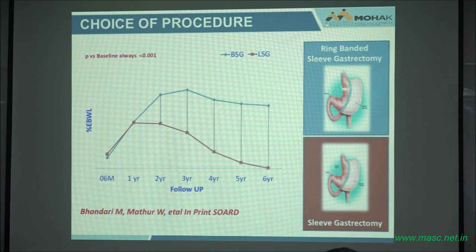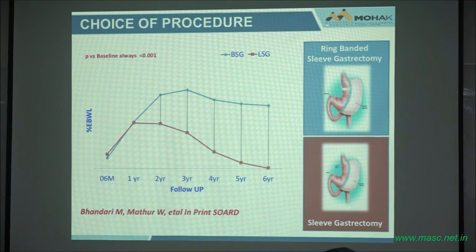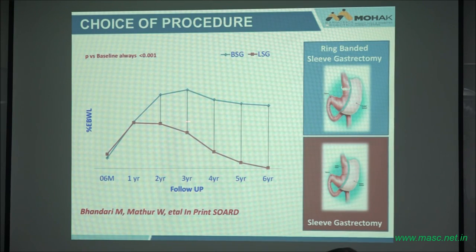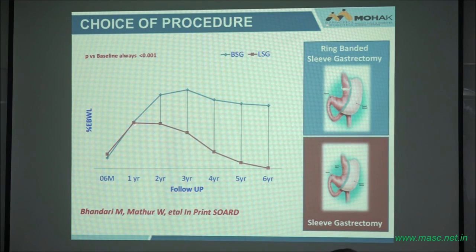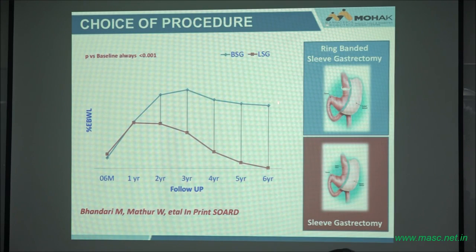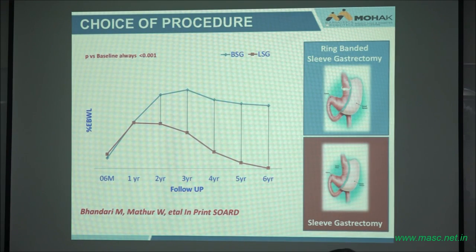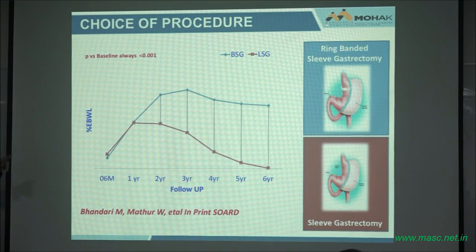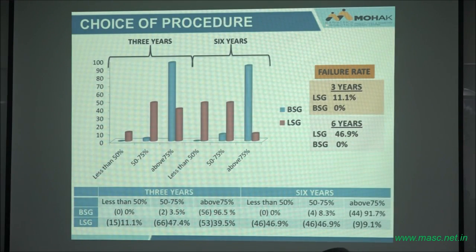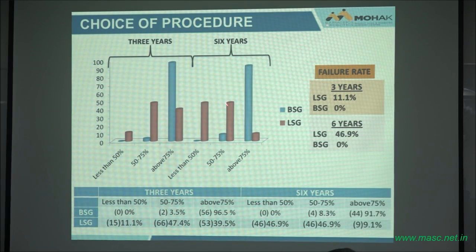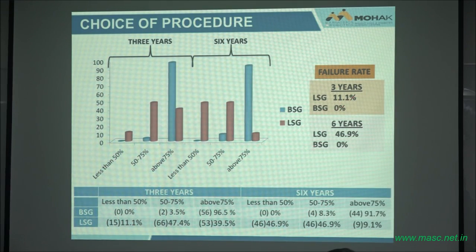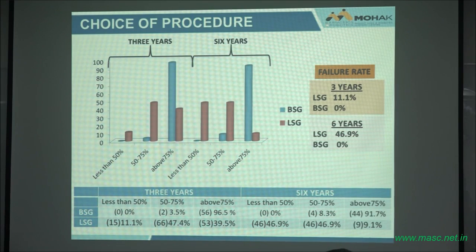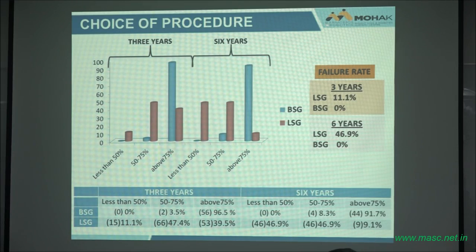This is our own work at the Mohawk Clinic in Indore — the banded sleeve versus the non-banded sleeve. In the beginning they both look the same. Most people say they're the same. But when you get to the sixth year, there's almost a 30% difference in percentage excess weight loss between the banded sleeve and the non-banded sleeve. That is why if you want to do a sleeve, we say put a ring on it.